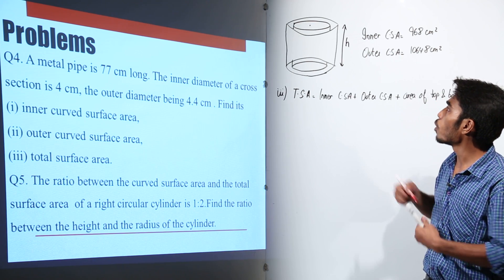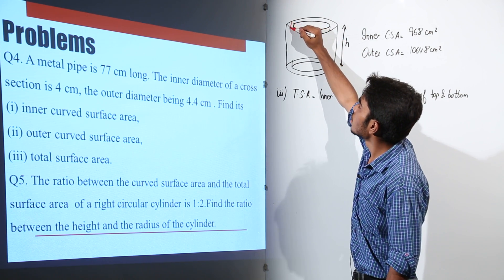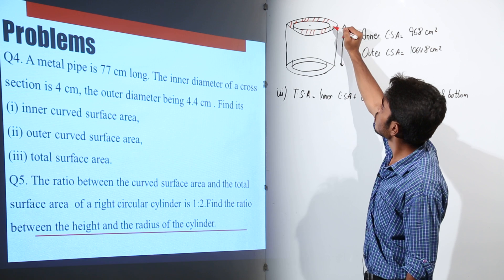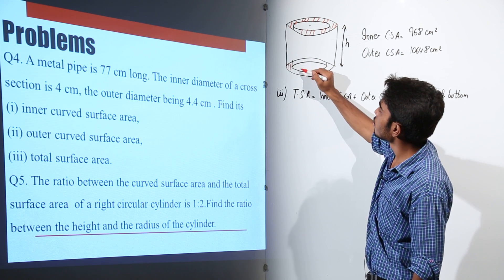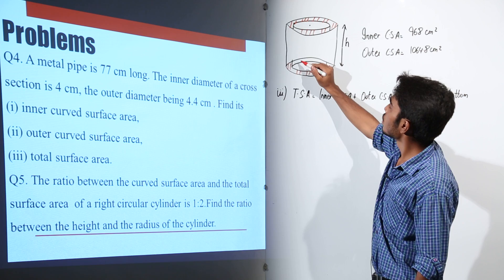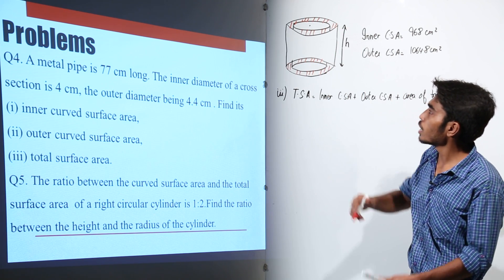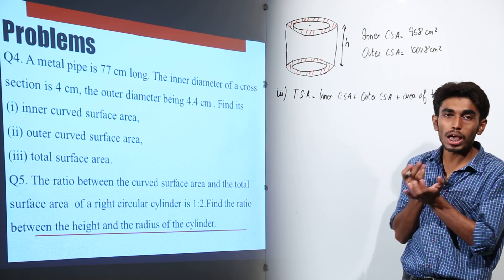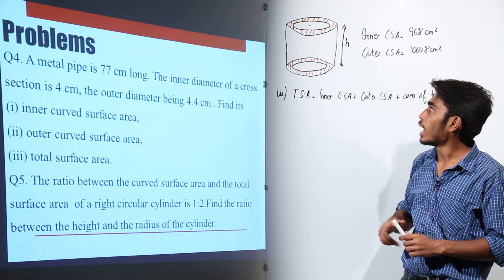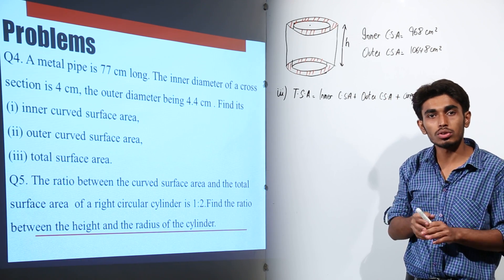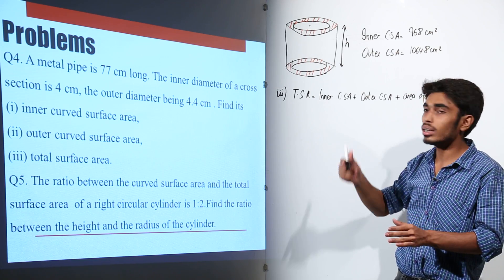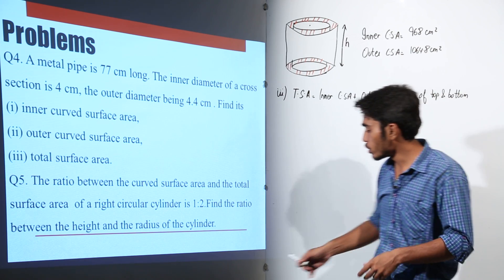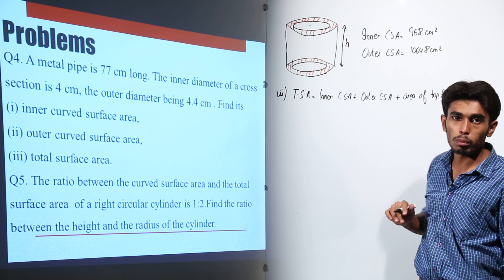Now what would be the area of the top and bottom surfaces? The area marked in red is what we need to find, because this metal pipe is hollow. It has an inner diameter and an outer diameter, so the area of top and bottom would be the area enclosed between the inner and the outer diameter.